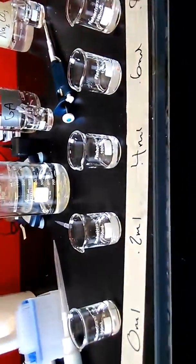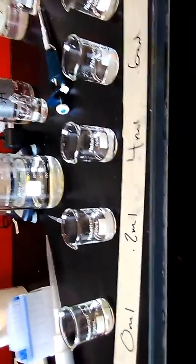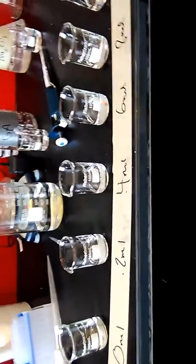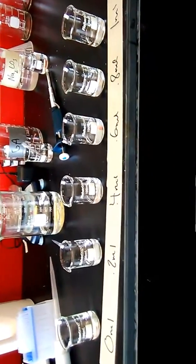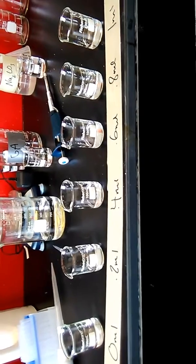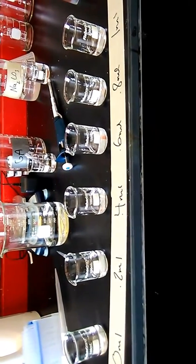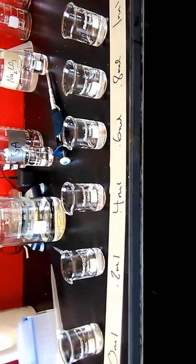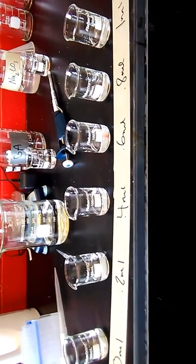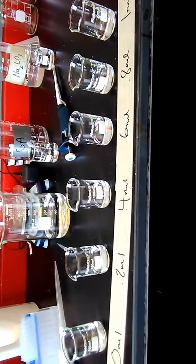Hi, welcome back. And now we are making a standard curve with gallic acid. Basically, we're substituting gallic acid for the juice to set a standard or a curve of what the reactant should look like.